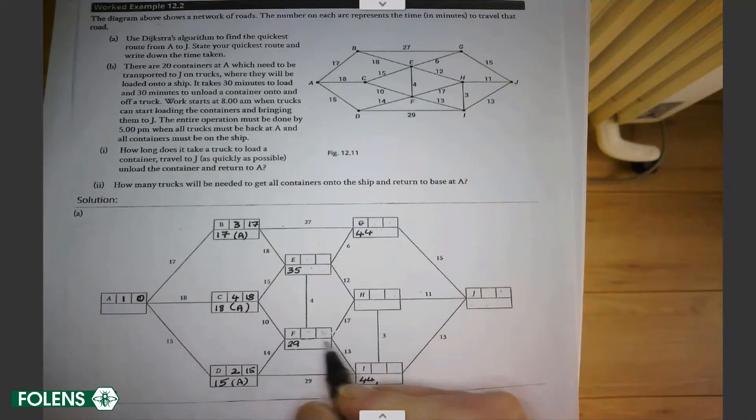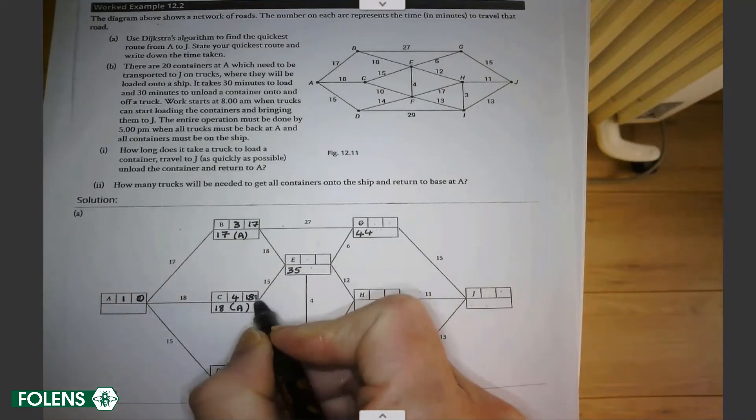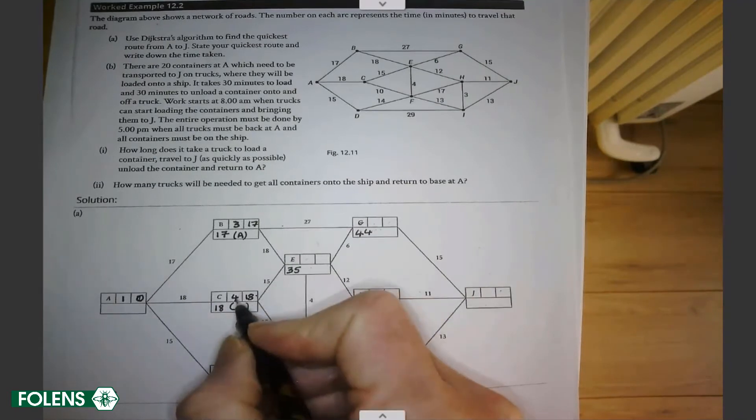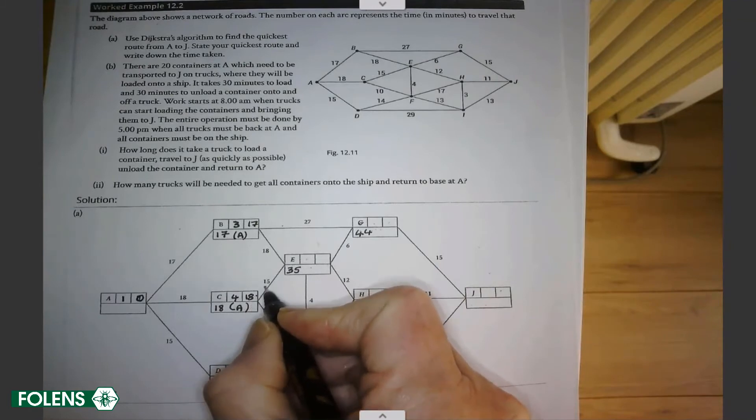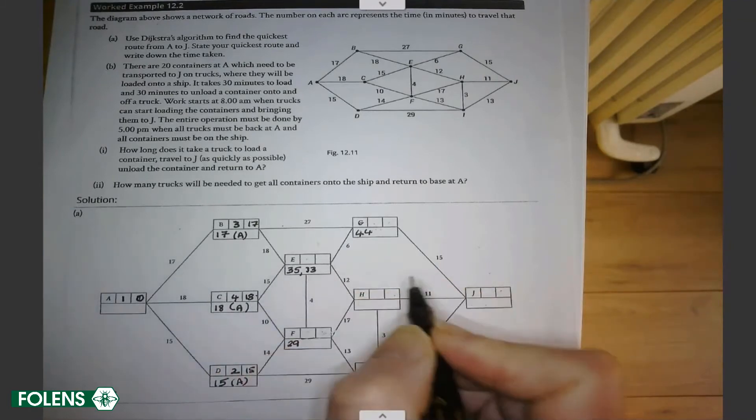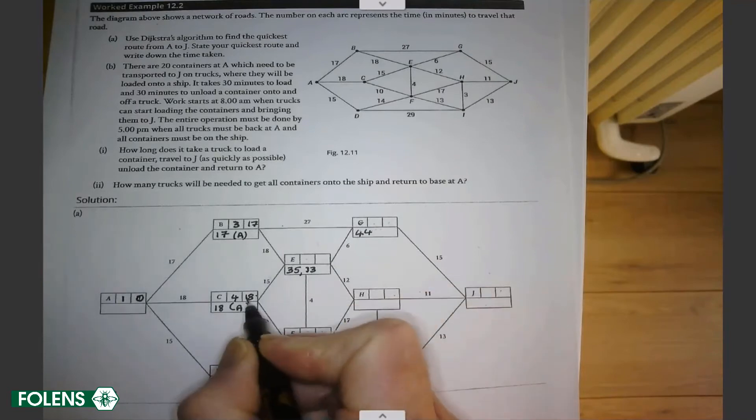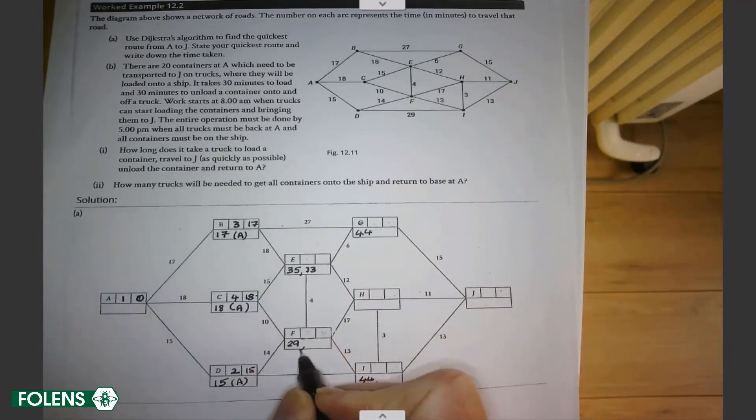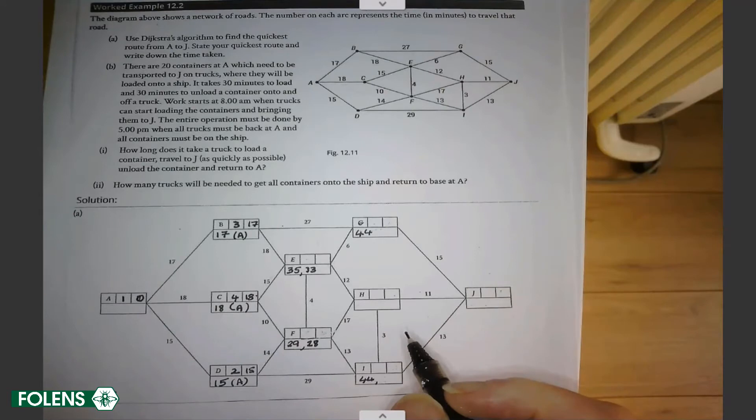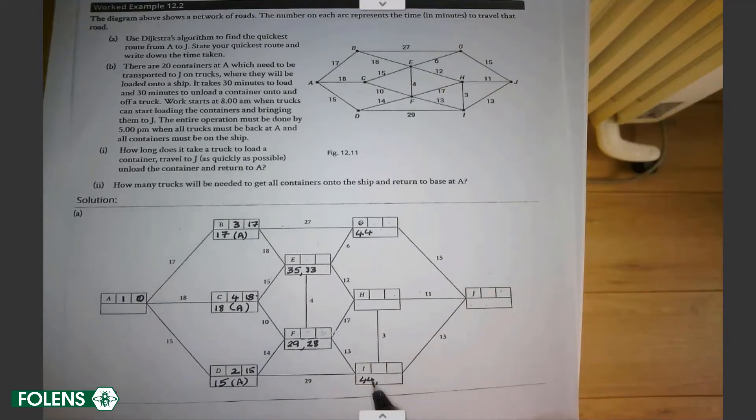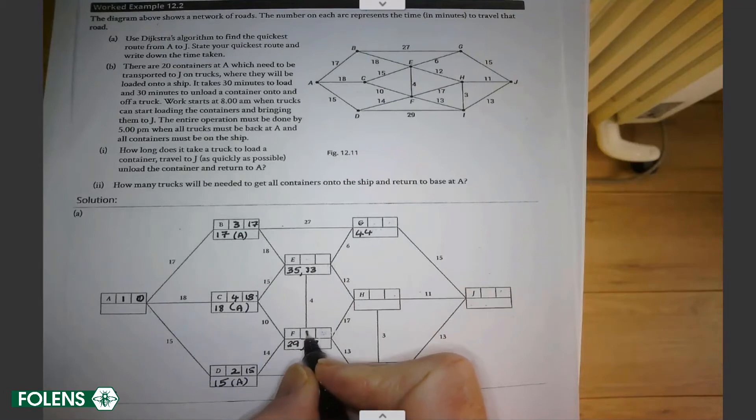Now, what does that do? Well, C goes on to E and to F. If you go from C to E, you have a final value of 18 plus 15 is 33. Ah, that's an improvement. If it was greater than 35, you wouldn't bother writing it down. But since it's an improvement, we'll put it in. 18 and 10 is 28. That's an improvement on 29. So that's the best working value so far for F. And now we look at our working values 44, 33, 28, 44. The best of those is 28. So F becomes our fifth final value. Its final value is 28. And where did it come from? It came from C.